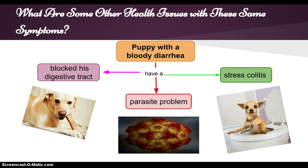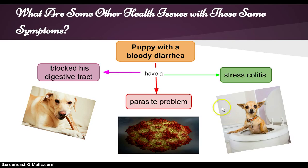What are some other health issues with these same symptoms? A puppy with bloody diarrhea could have a parasitic problem, a blocked digestive tract, or stress colitis. It is crucial that you see your vet for an accurate diagnosis.